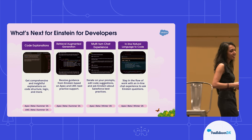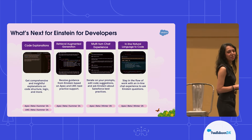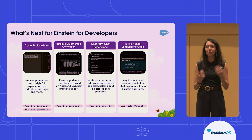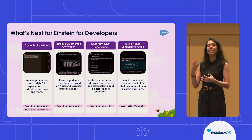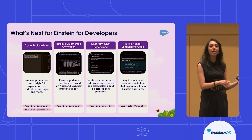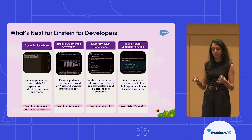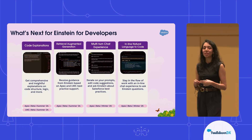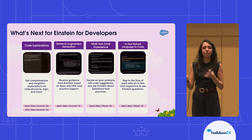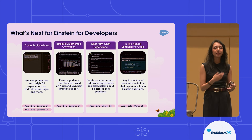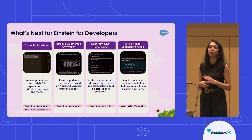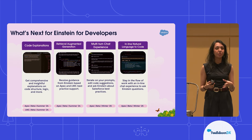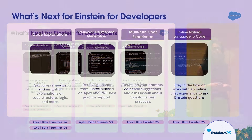Next up is one of my favorites — multi-turn chat. We've heard from many of you that there are a few different things that you'd like to see solved. A lot of times when you're working with natural language to code, you want the ability to iterate over your prompts and refine the response that you get from the LLM. With multi-turn chat, you'll be able to do that. And we've heard from many of you that you're not always generating net new code — a lot of times you're editing or refactoring existing code within your projects. Within this chat interface, we'll be building in capabilities to make those tasks a bit easier as well.